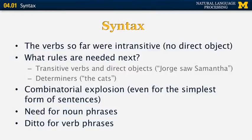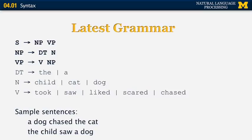We need to combine words into constituents and define syntactic rules in terms of constituents rather than individual words. For example, we can expand the idea of a noun into a noun phrase, and verbs into verb phrases. Verb phrases include intransitive verbs like walked, transitive verbs, ditransitive verbs, verbs with prepositional phrases, and so on. In our expanded grammar, S goes to NP followed by VP. NP is a determiner followed by a noun, and VP is a verb followed by a noun phrase. The determiners are the and a, the nouns are child, cat, and dog, and the verbs are took, saw, liked, scared, and chased.